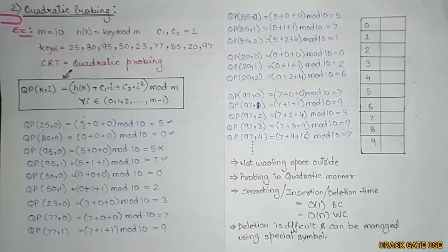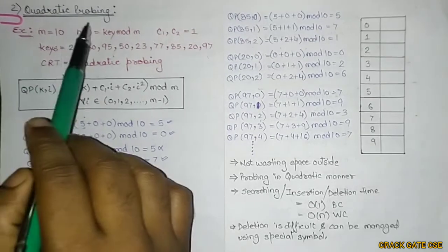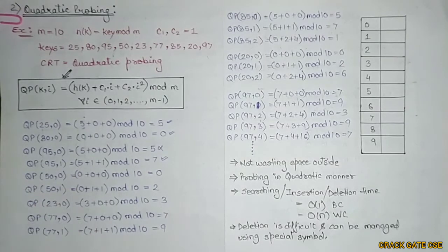Hello friends, welcome to Crack Gate CSE. In this series on algorithms, we are continuing with our hashing topic. Today we will be discussing what is quadratic probing and how to find out the number of collisions using the quadratic probing collision resolution technique.